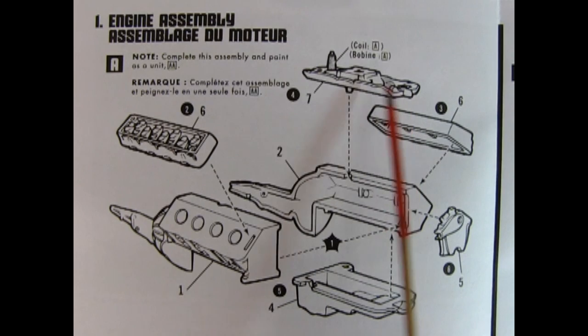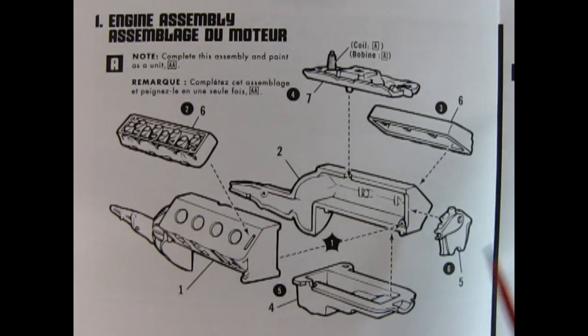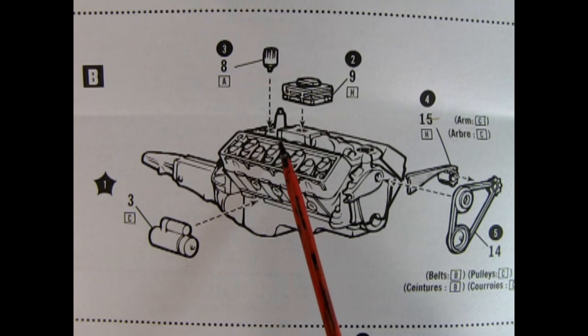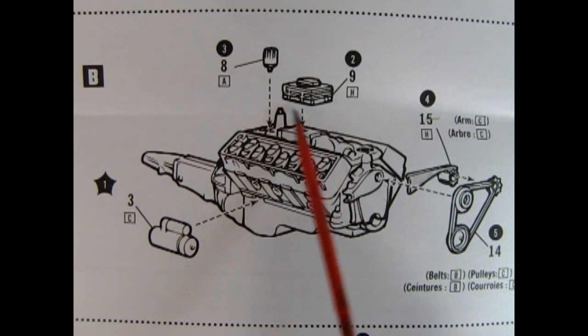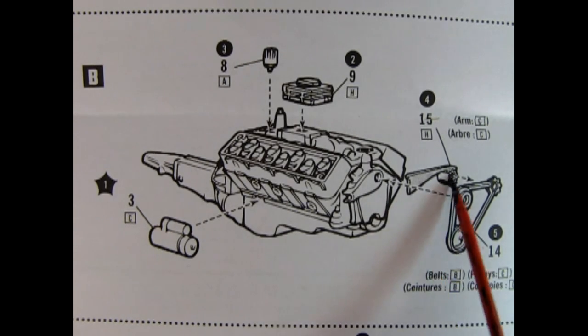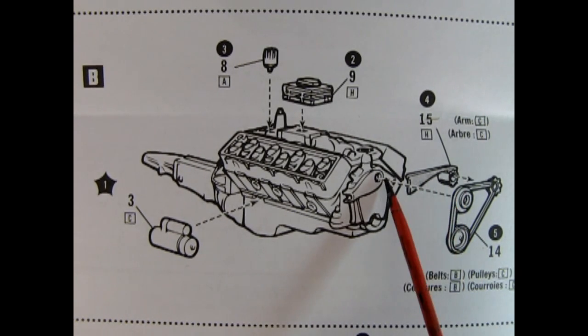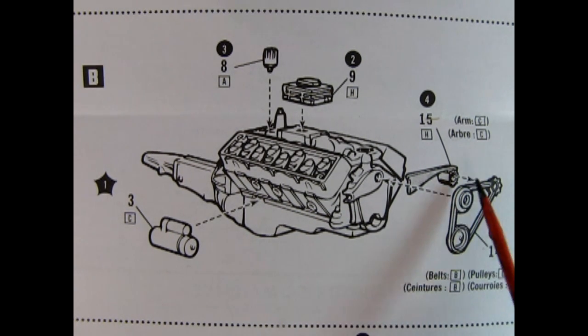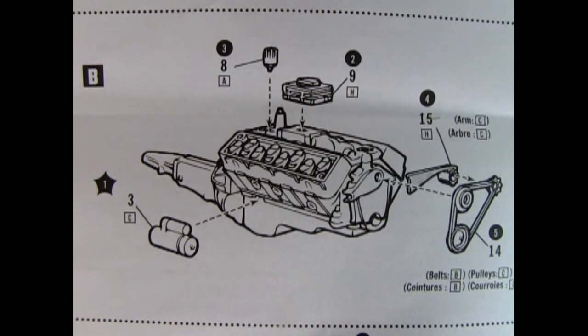We've got our intake manifold with the coil molded in place. We also have our water pump and front timing chain cover and the oil pan which glues up from the bottom. Step B shows our distributor being installed beside the coil. The carburetor being glued onto the top of the intake manifold. The alternator with the bracket being glued on the side of the water pump as well as the belts and pulleys. We also have the starter motor being glued to the side of the engine block.